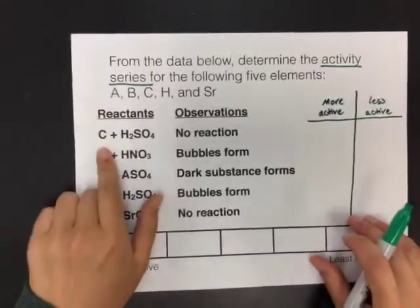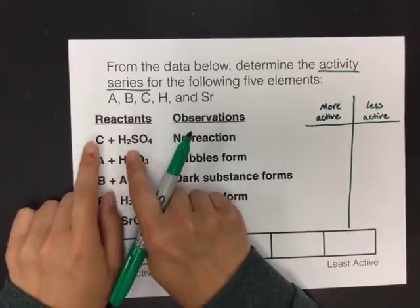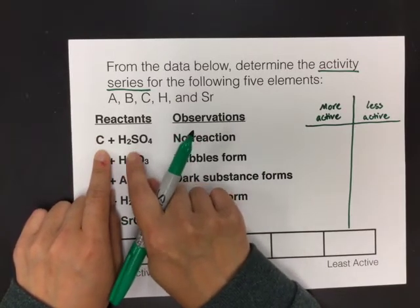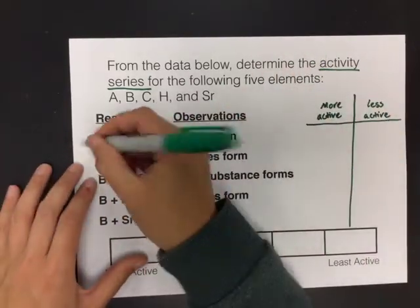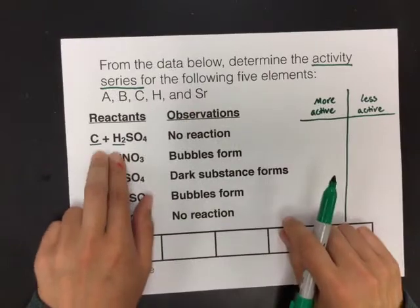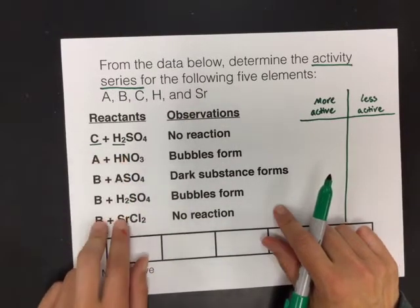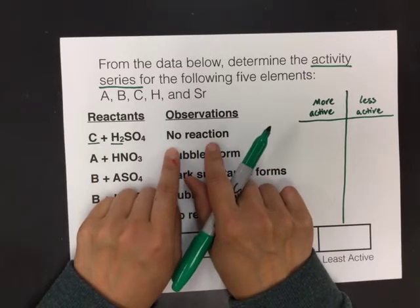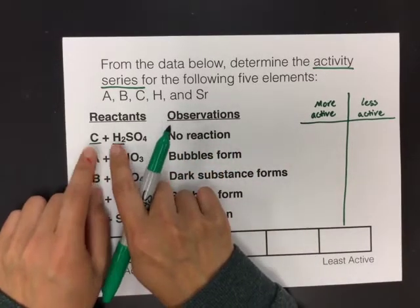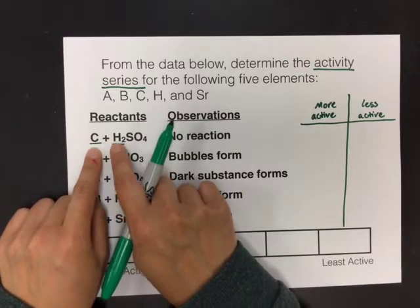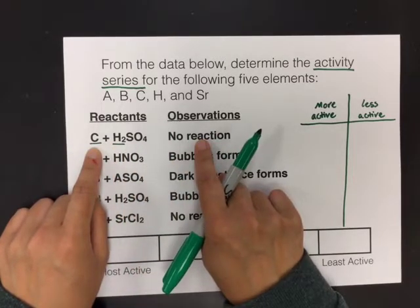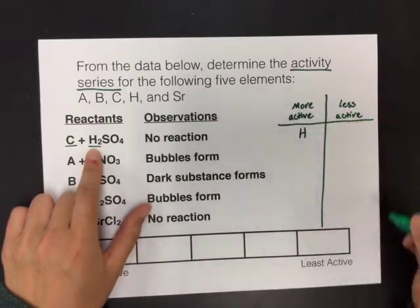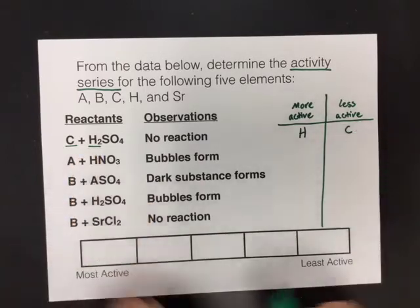So in this first reaction, whoever did this reacted element C with H2SO4 or sulfuric acid. So what's trying to happen, what C is trying to do is replace the hydrogen. These are single replacement reactions. However, our observations are that no reaction happened. So you just have to ask yourself, if no reaction happened, who was stronger? C was trying to kick out H, but it was not able to do so, which means that H was the stronger element. So we would say that H is more active, and therefore C was less active.